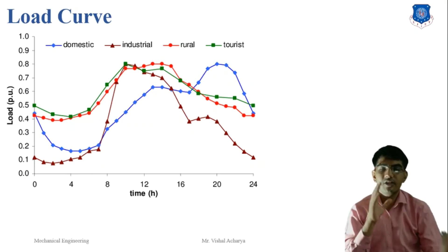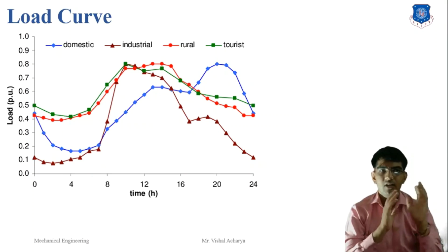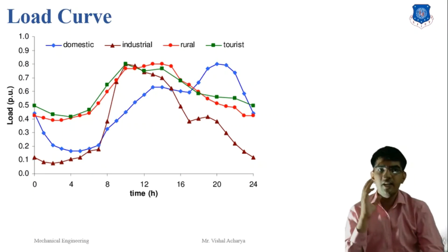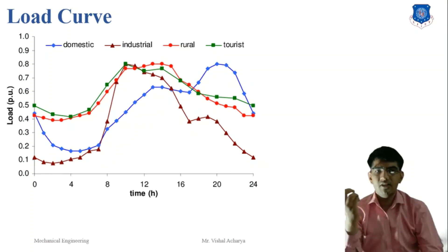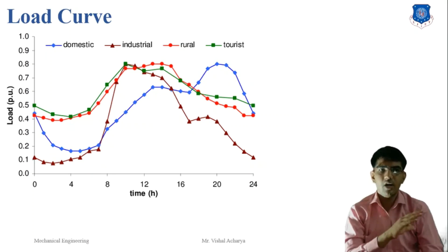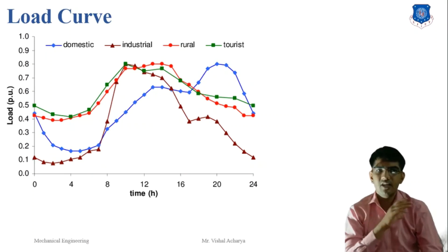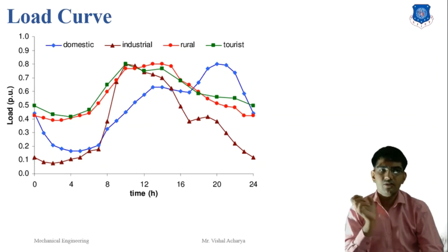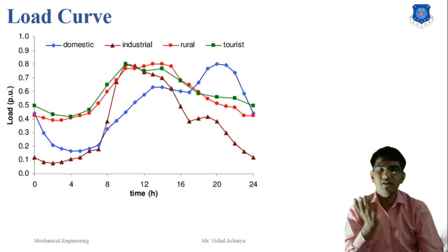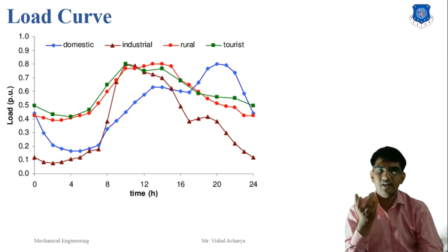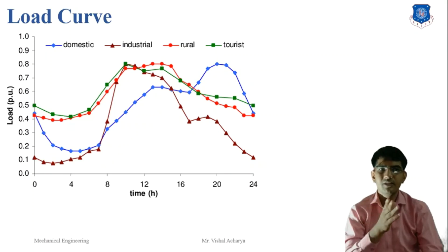Some information obtained from the load curve: First, the load duration curve determines the load variation during different hours of the day. Second, it indicates the peak load, which determines the maximum demand on the power station. Third, the area under the load curve gives the total energy generated in the period under consideration. The area under the curve divided by the total number of hours gives the average load, and the ratio of that area to the total area of the rectangle containing it gives the load factor.